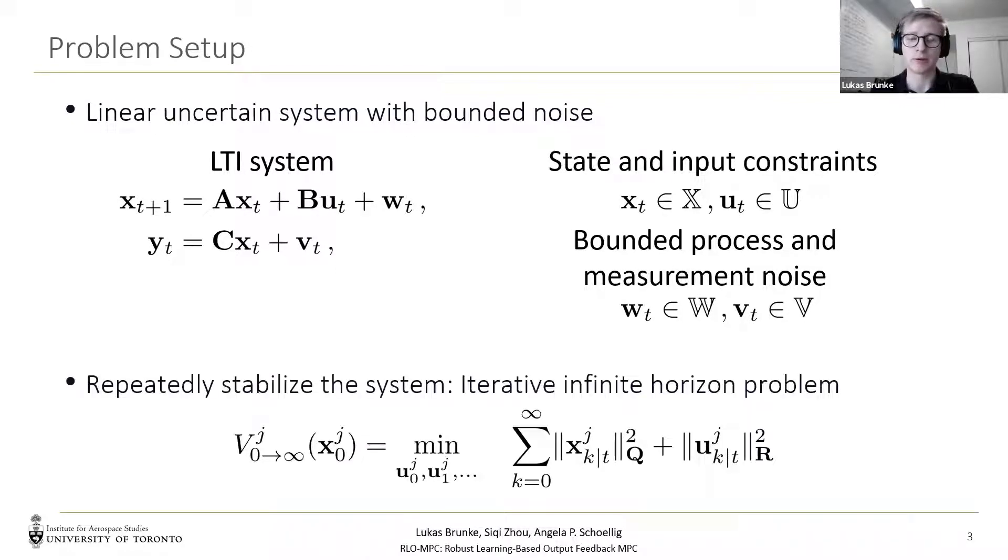We want to repetitively control a system to execute the same task, and this can be formulated as an iterative infinite horizon optimal control problem. The objective function for a stabilization task at iteration j is shown here with a quadratic cost. However, the infinite horizon is computationally infeasible, and in the next part we will discuss which components are needed for a computationally feasible controller.